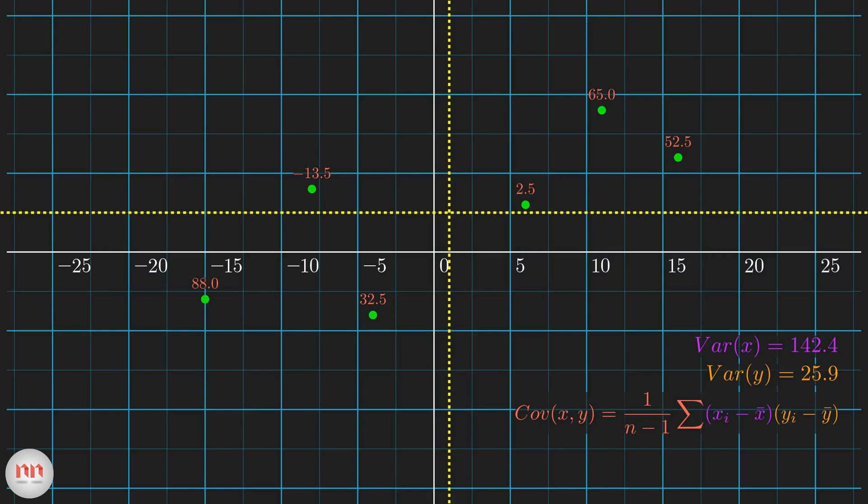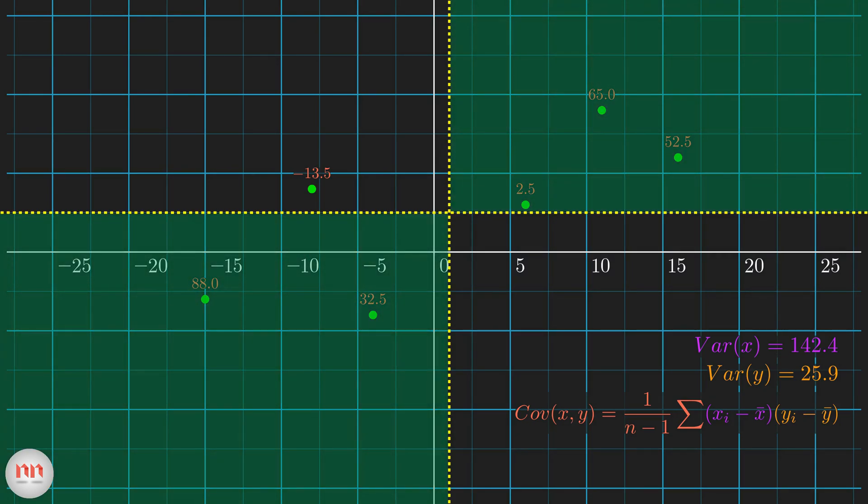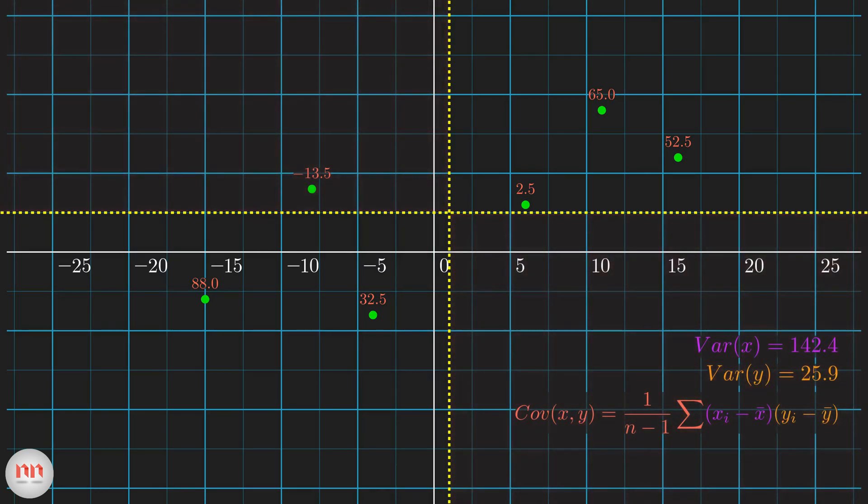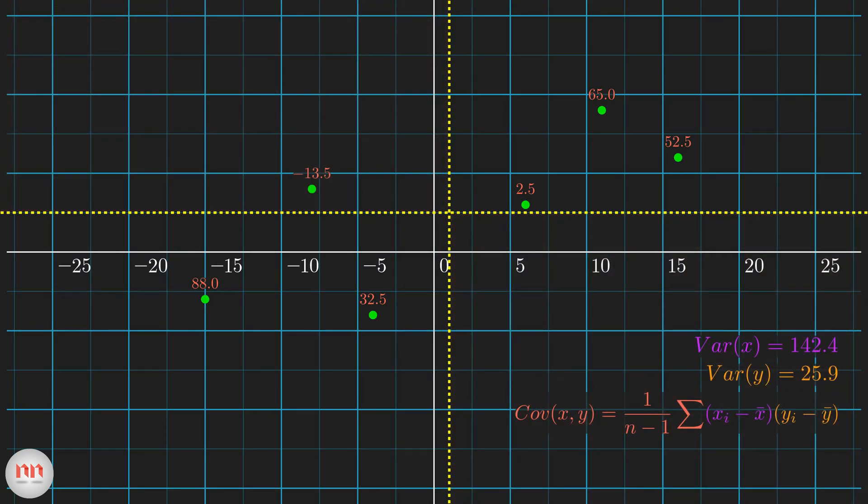After doing this for all the points, you can see that the points lying in the green region give positive values and the points in the red region give negative values. In our case, we have more points in the green region than red, so our sum will be positive and hence the covariance will be positive.